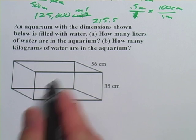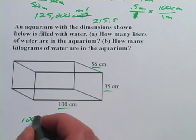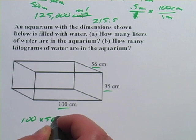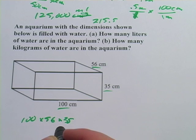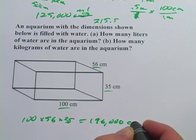The first part to figure out the cubic centimeters in volume is we have to multiply the three sides. So 100 times 56 times 35. And I get 196,000 cubic centimeters.